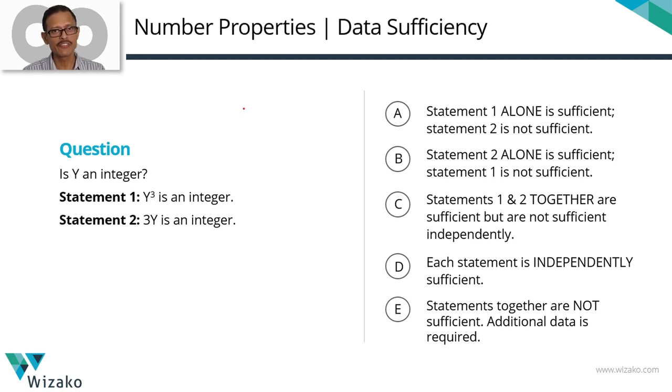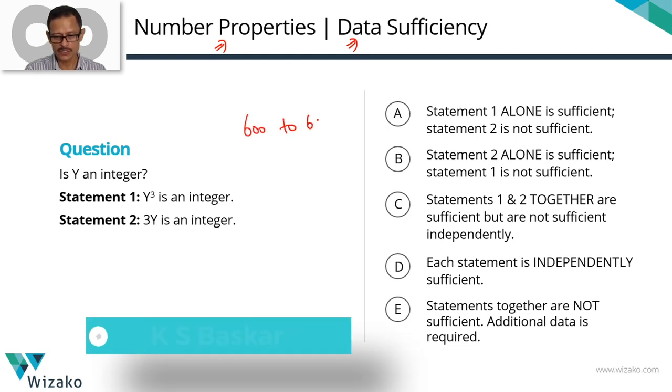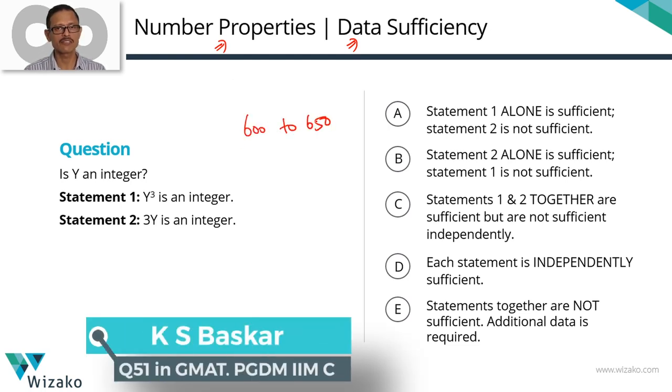This question is an easy to medium difficulty GMAT data-sufficiency question. It comes from the topic of number properties. I'll classify this as a 600 to 650 level question.